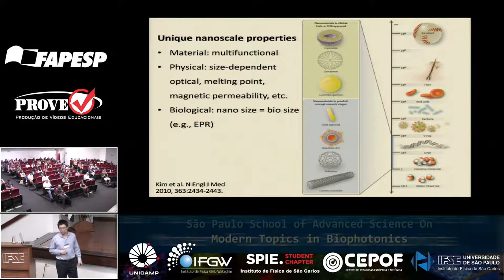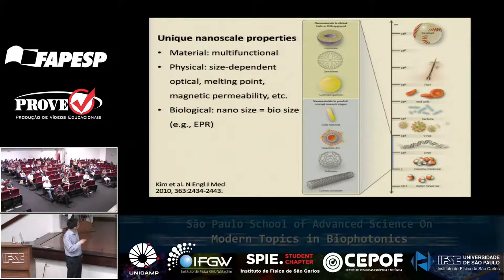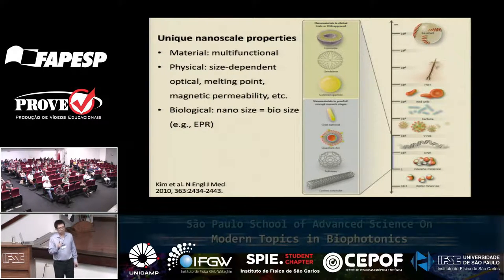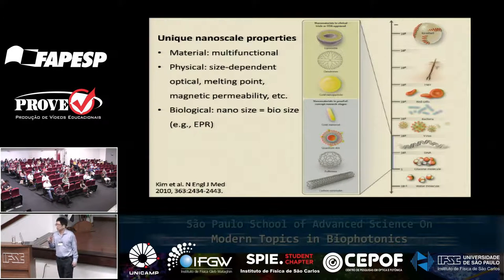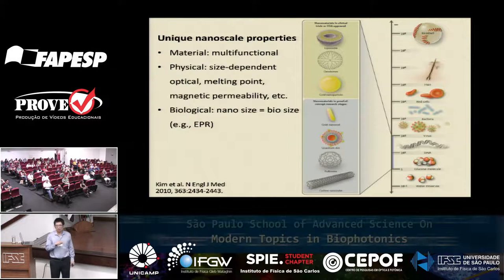Why is nano important? Number one, nano means size — conventionally defined as one to 100 nanometers, plus intentional design. But the key for nano, I would argue, is in three different areas: nano-scale material properties, multifunctionality as the hallmark of nanomedicine, and physical properties like photonics, magnetic behavior, and melting point. There's also the biological side — probably the most important effect everyone claims for nano is the EPR effect in cancer.